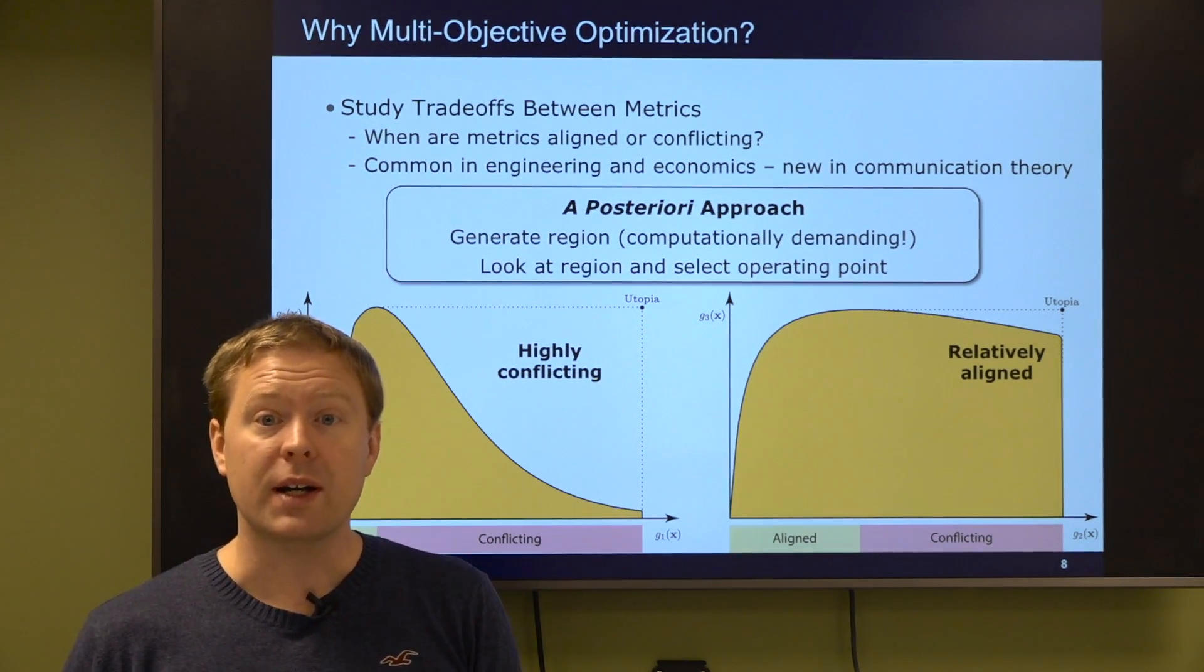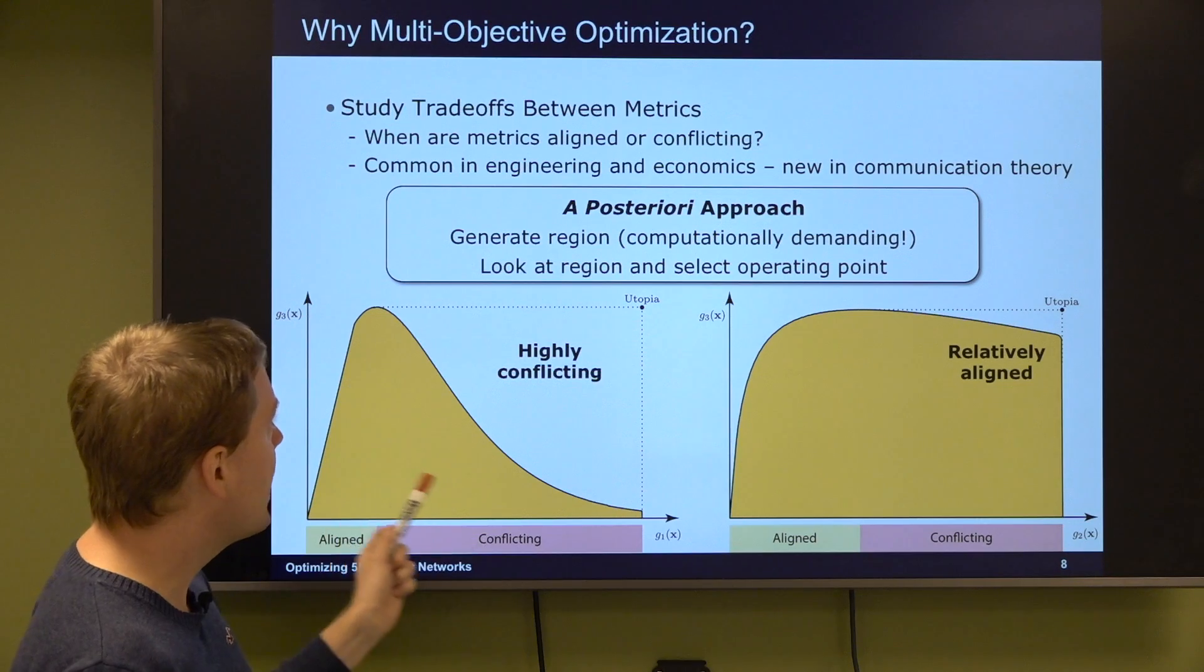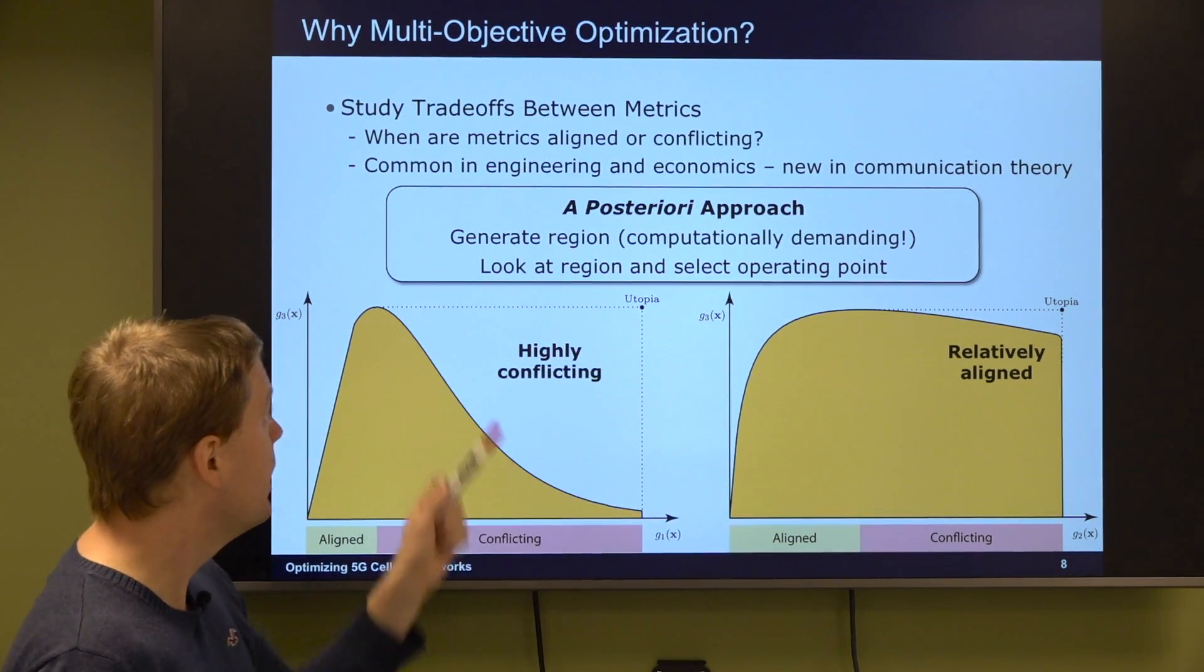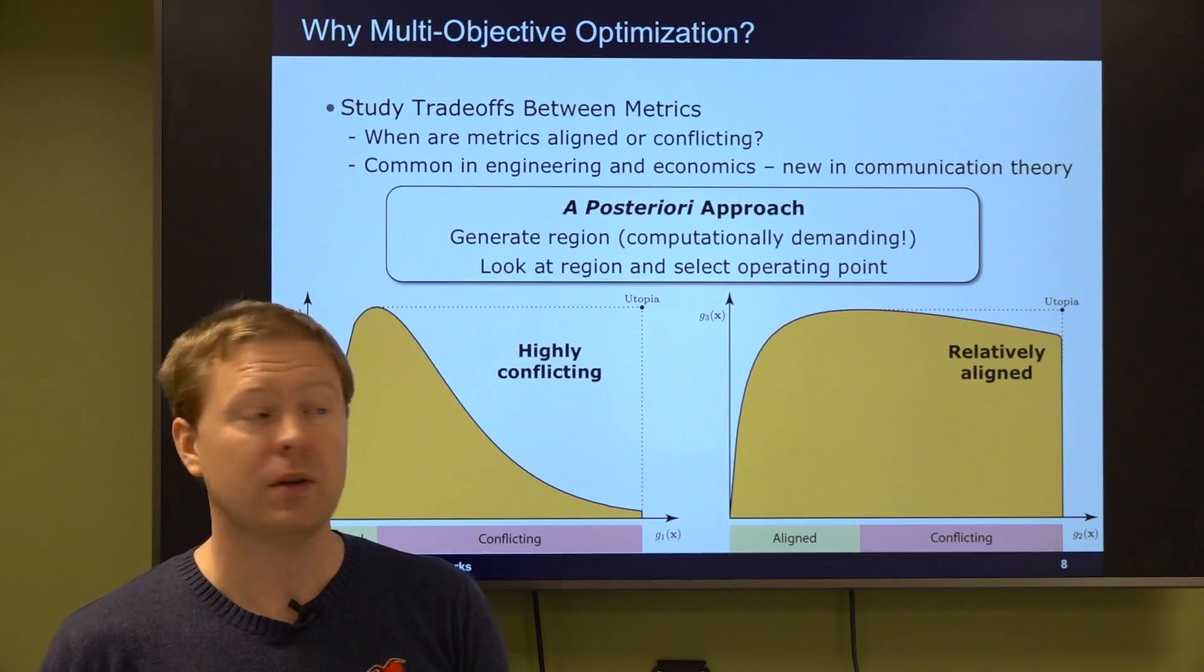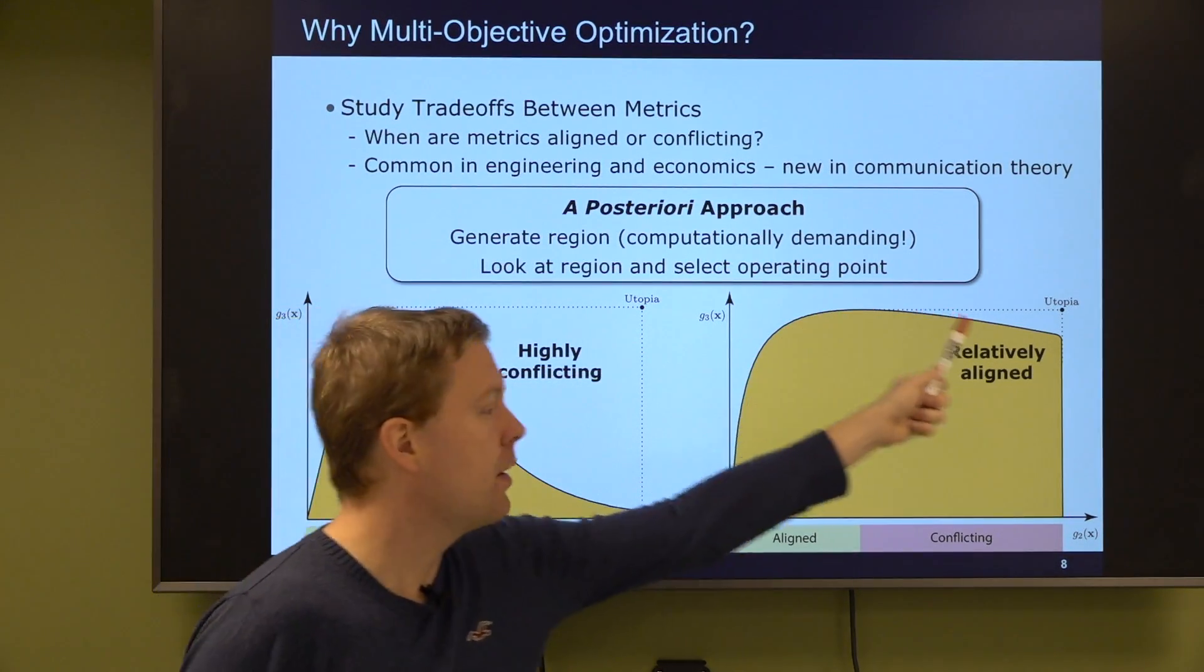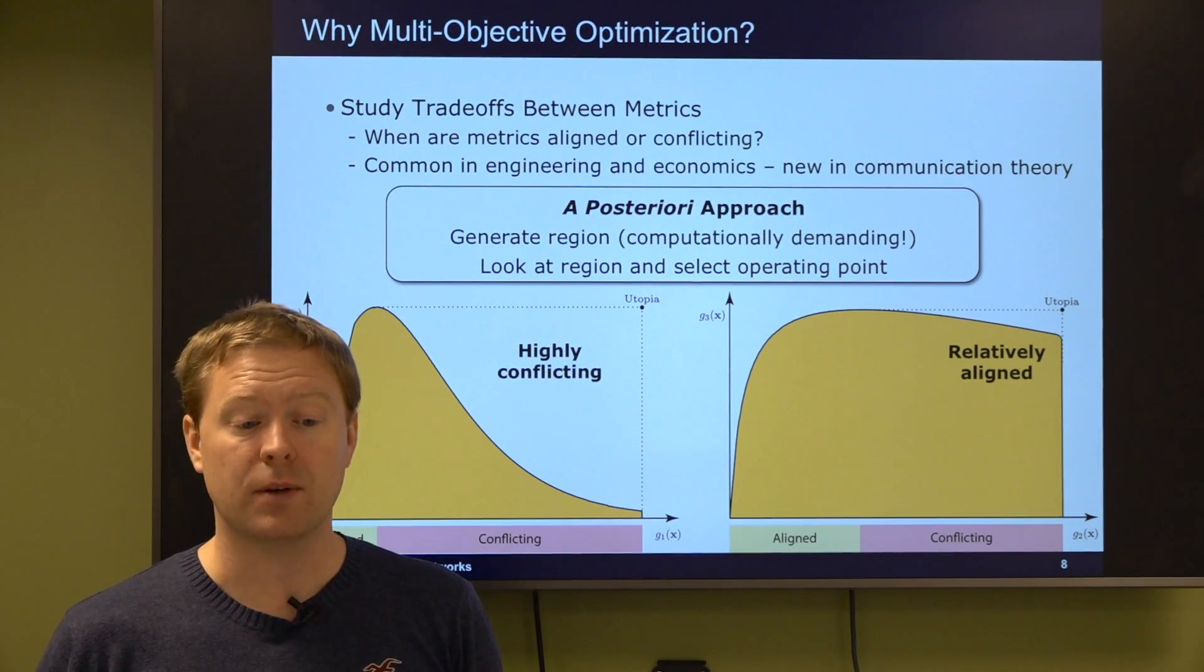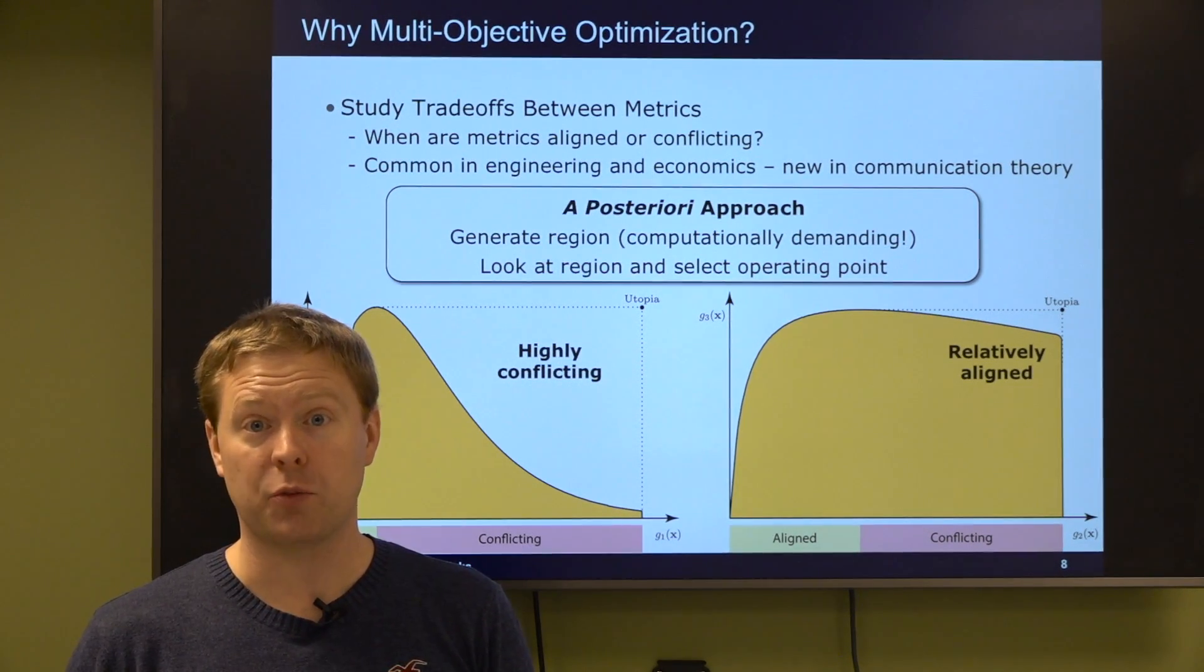The a posteriori approach to multi-objective optimization is to generate regions like this, which can be computationally demanding, look at the region and select an objective point, which point we would like to have, something on the Pareto boundary, and then we make an informed decision.